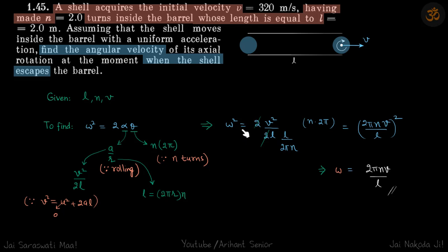So we'll just substitute these values and simplify and get omega is equal to two pi n v by L, our answer.